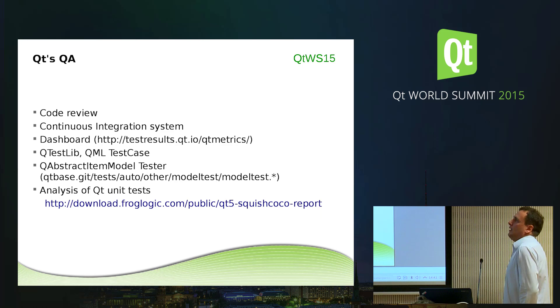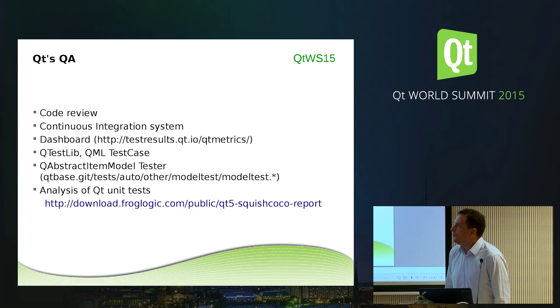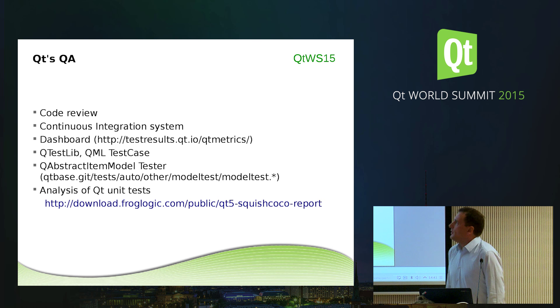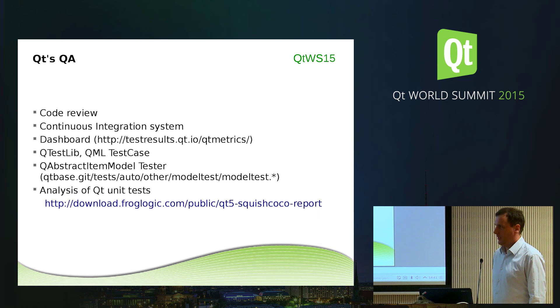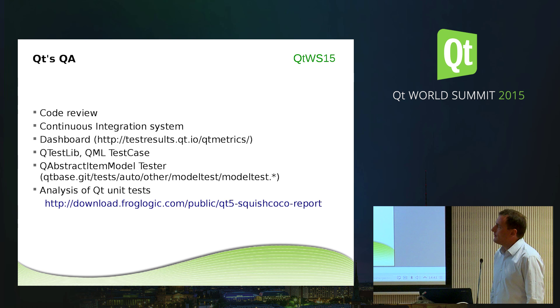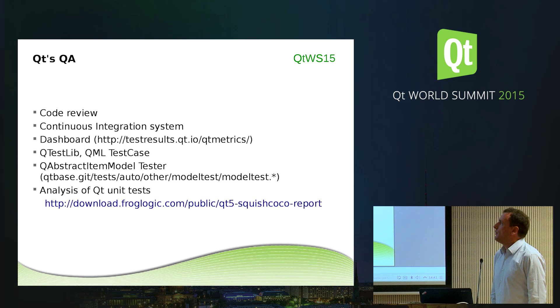Since we were given just very few minutes for this talk, I've noted a few items about Qt's quality assurance on one page. There's code reviewing that takes place — there's another session in parallel to this one, so I'll skip that here. There's a CI system where batches of changes are proposed, a build test runs, unit tests are run, and only those that pass are accepted into the Qt repository — could be done by Jenkins or anything else. There's a dashboard which those interested can look at, showing the status of all the different package builds done by the Qt company. And if you want to write your own tests, you of course know about Qt Test, which has been there for many years.